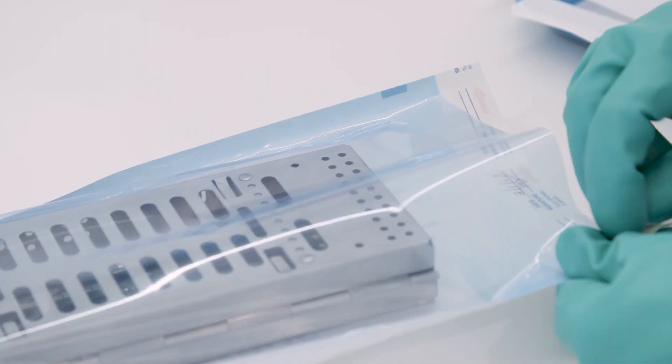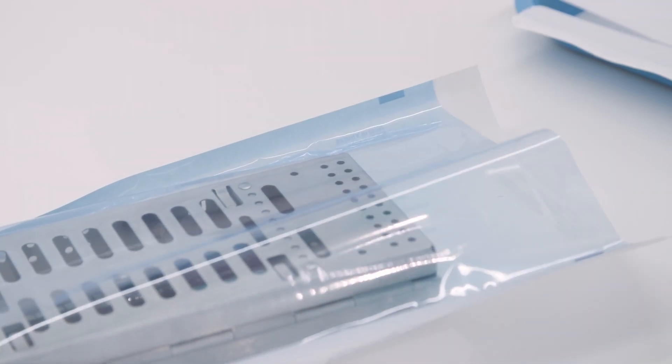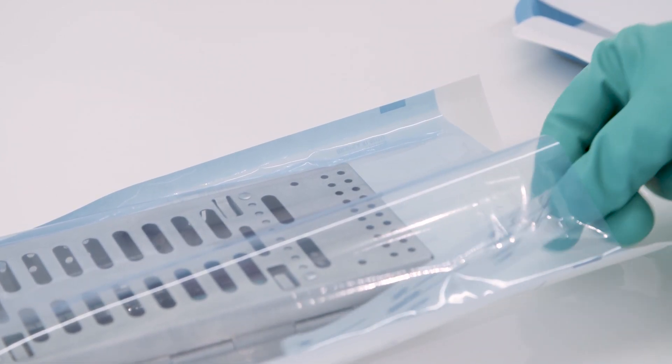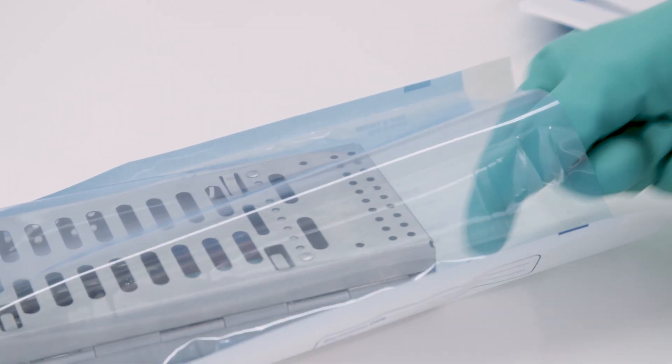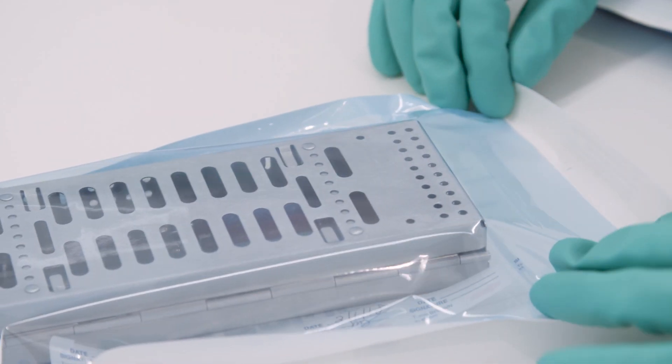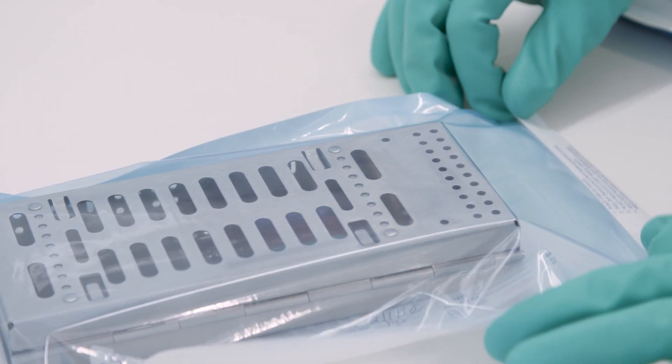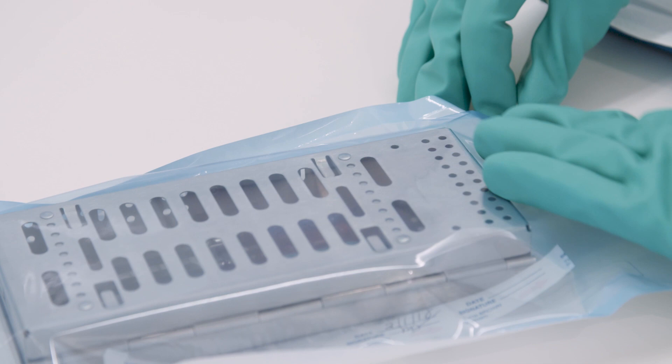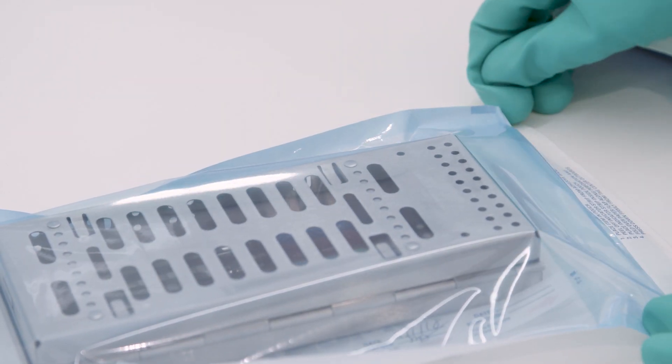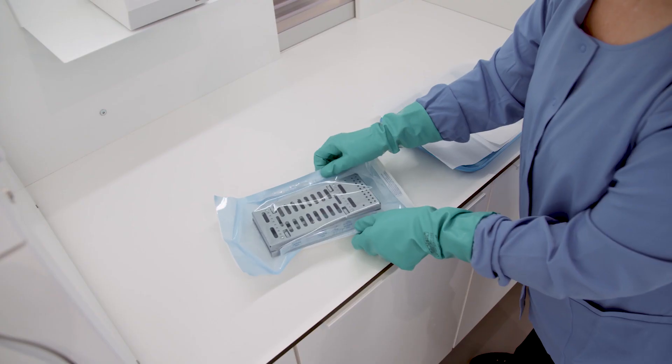The Assure Plus sterilization pouches come with a peel-off strip, which has a Centers for Disease Control recommended class IV internal indicator. Simply fill out the strip, peel it off and place it in the pouch with your instruments. Carefully fold the panel flap along the perforation to create a tight seal.